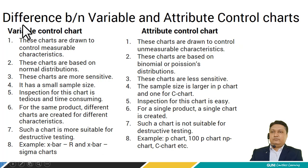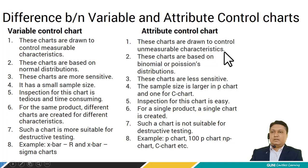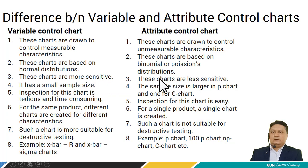Let's see the difference between variable and attribute control charts. Variable control charts are drawn to control measurable characteristics, while attribute control charts are drawn to control unmeasurable characteristics. Variable control charts are based on normal distributions, while attribute control charts are based on binomial or Poisson's distributions. Variable control charts are more sensitive while attribute control charts are less sensitive.